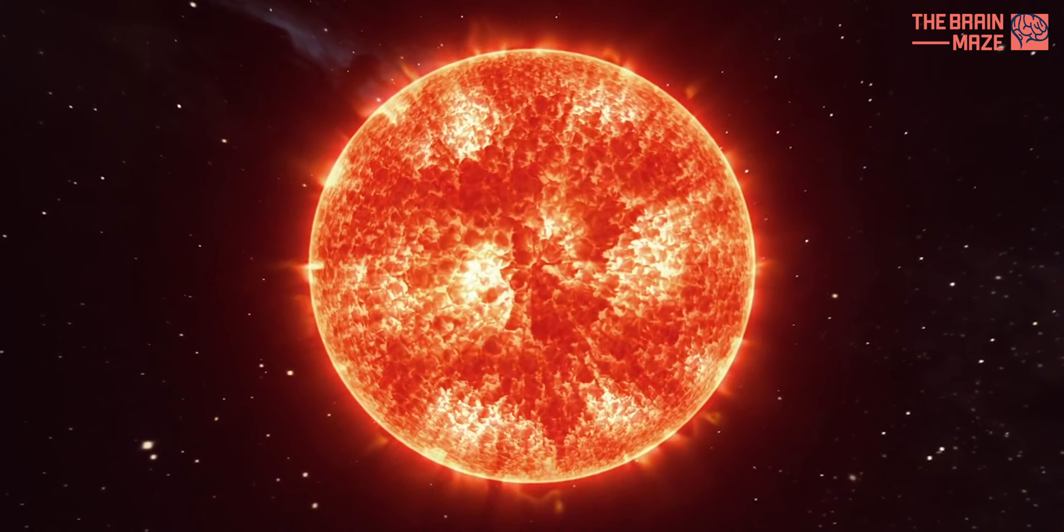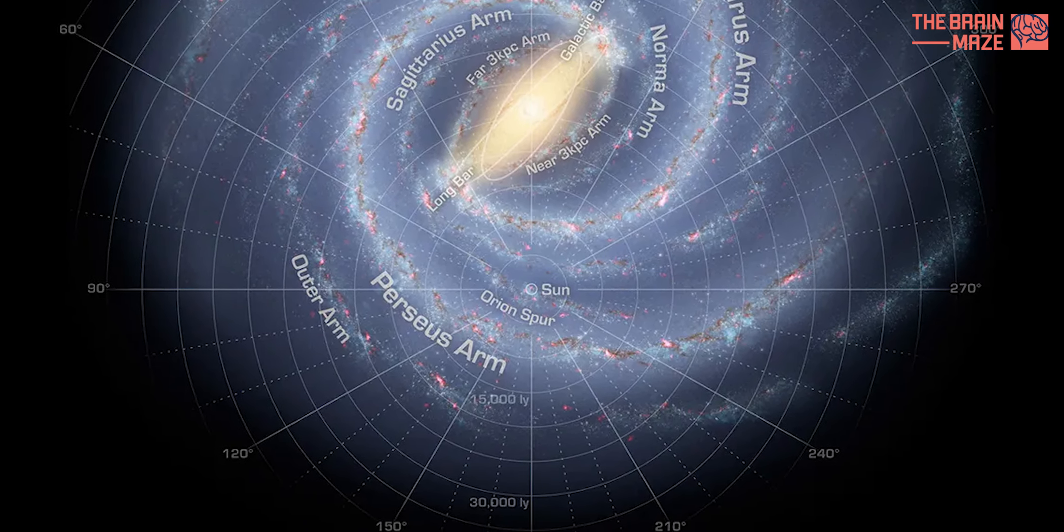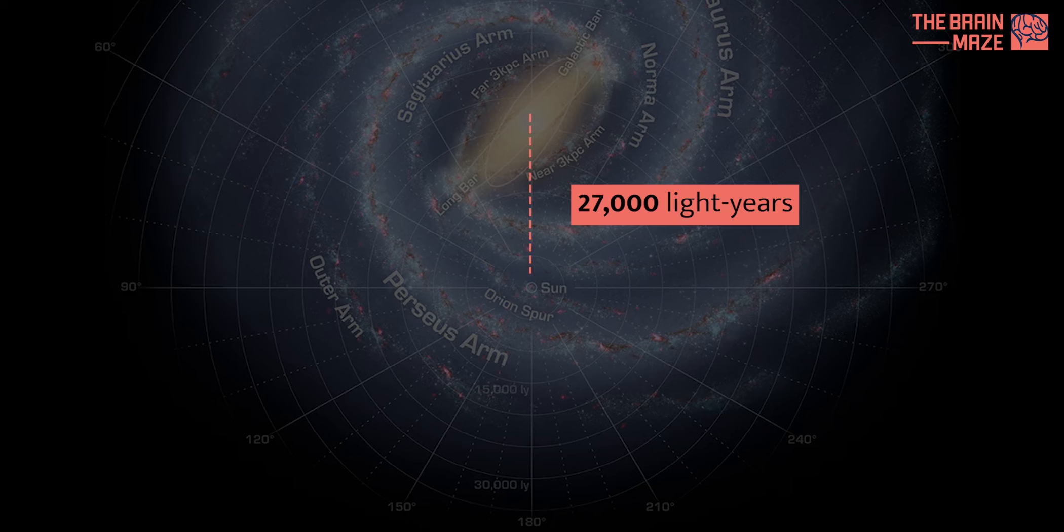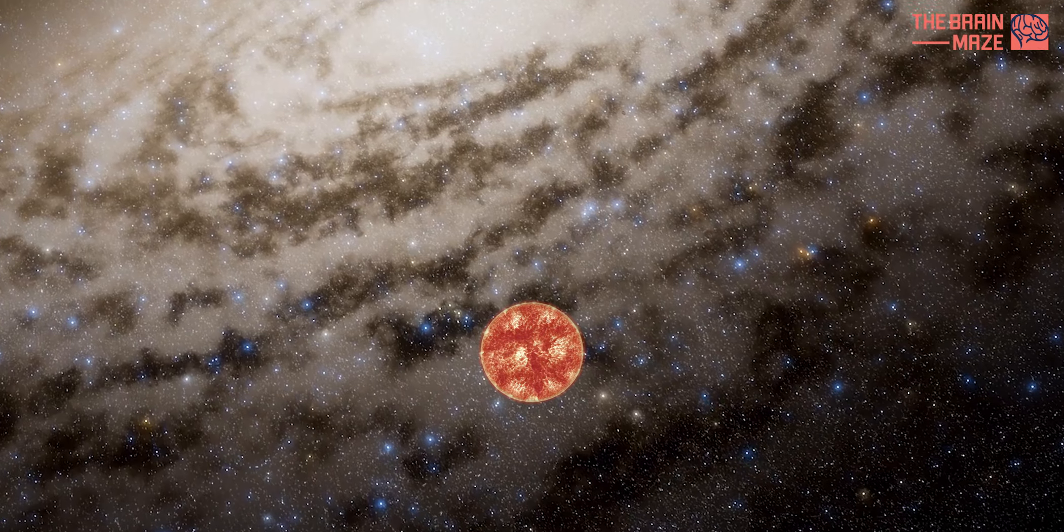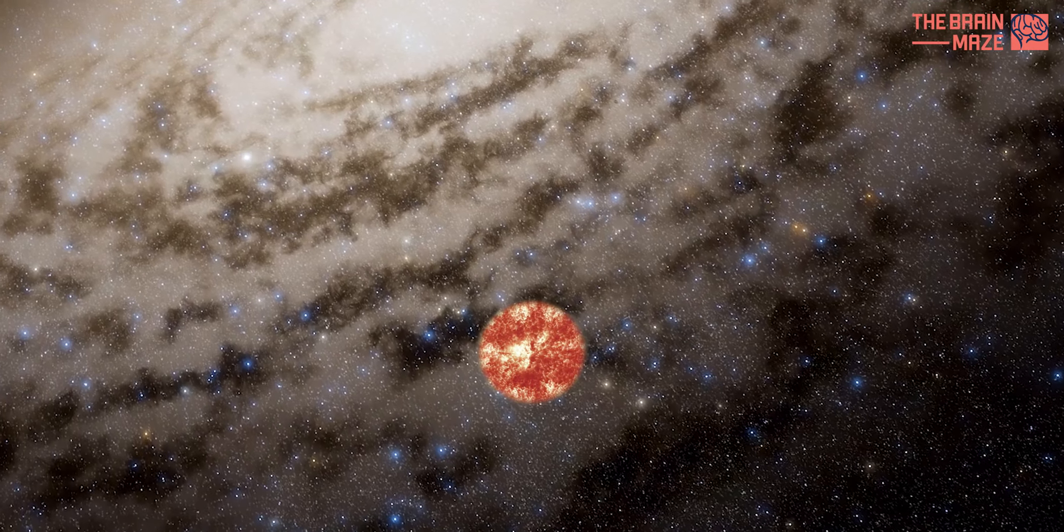Our Sun is located about halfway between the center of the Milky Way and its edge, roughly 27,000 light-years away. That's a staggering distance, but it's just a tiny fraction of the galaxy's vast expanse.